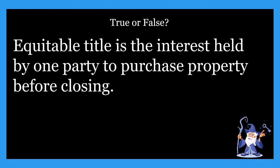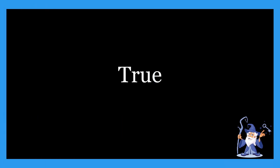Next one: equitable title is the interest held by one party to purchase property before closing. Is that true or false? It's going to be true. Equitable title is the interest held by one party to purchase property before closing. In between closing and the execution of a sales contract, the buyer has something called equitable title, meaning they have the right to purchase the property before closing.